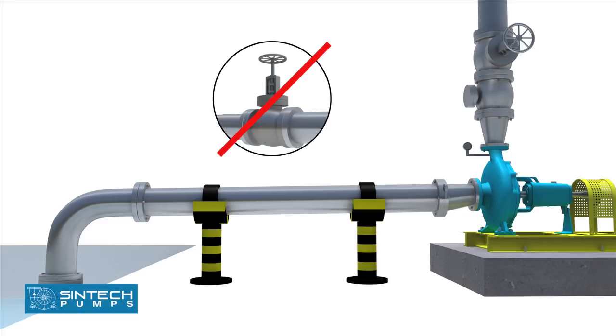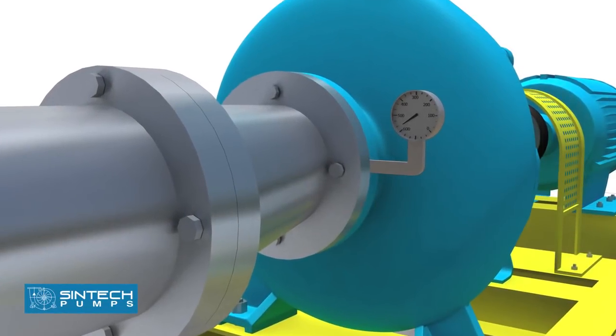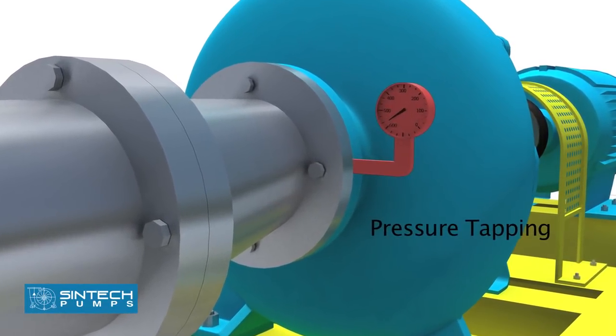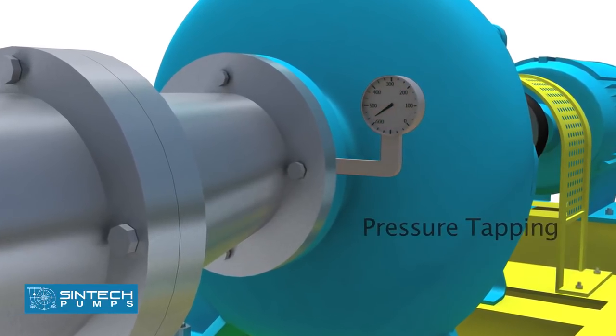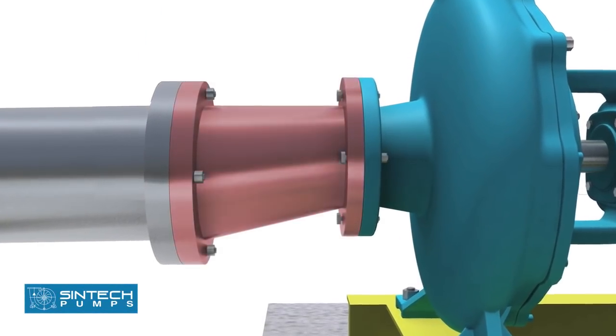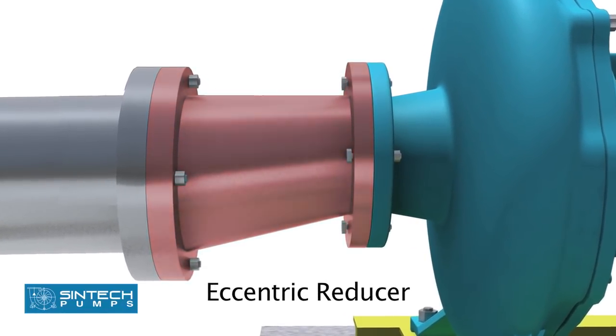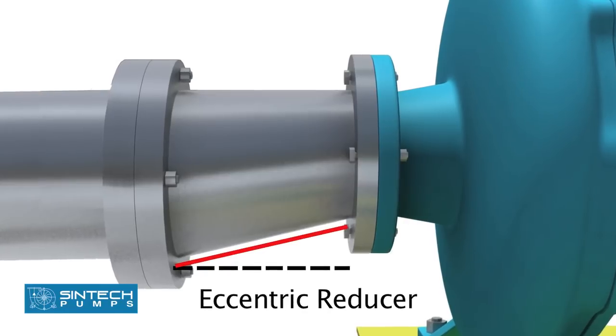No isolation valve is recommended. There should be a tapping provided for installing a vacuum gauge in the suction line. The reducer joining the straight length of the pipe in the pump line should be an eccentric reducer with the inclined side of the reducer as the bottom side.